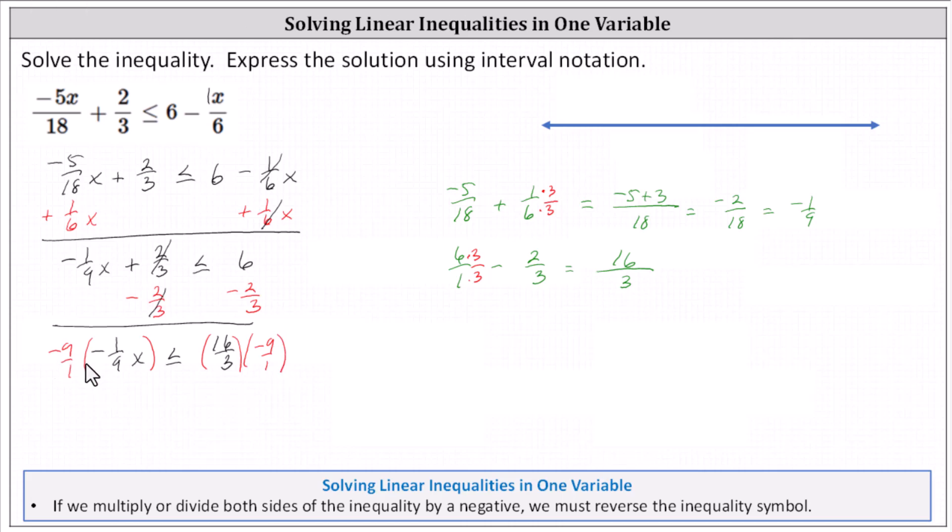Simplifying, -9 times -1/9 is 1. One times x is x. And then again, because we multiplied by a negative, we reverse the inequality. We have x ≥. Before multiplying on the right, we can simplify. Three and nine share a common factor of 3.